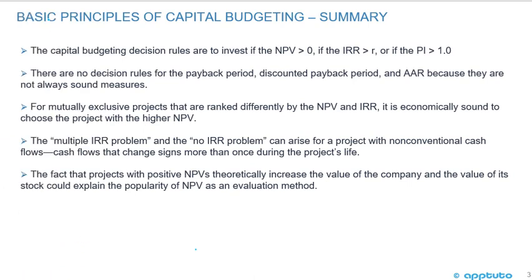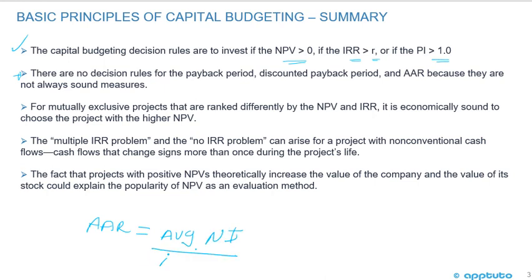In this slide we're looking at a summary of key concepts. The capital budgeting decision rules are to invest if the NPV is greater than zero, or if the IRR is greater than the required rate of return, or if the profitability index is greater than one. There are no decision rules for the payback period, discounted payback period, and the average accounting rate of return because they are not always sound measures. The average accounting rate of return equals the average net income divided by the average book value.